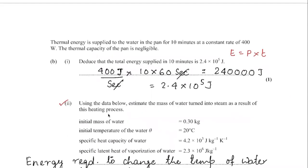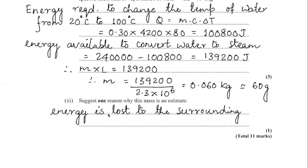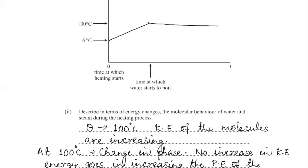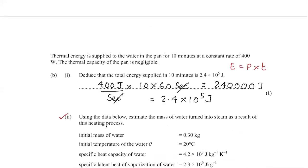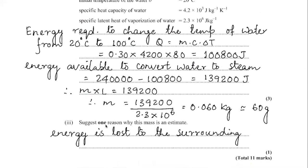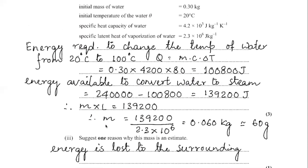The total heat supplied is 240,000 J. Subtracting the heat used to raise the temperature, the remaining heat energy used to convert water to steam is 240,000 − 100,800 = 139,200 J. This equals mass times latent heat (M × L). Dividing 139,200 by the latent heat gives a mass of approximately 60 grams.